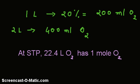So according to Avogadro's law, at STP, 22.4 liters of oxygen has one mole of oxygen. Therefore, 400 ml, that is 0.4 liters of oxygen, will have how many number of moles?